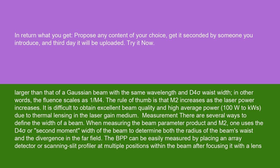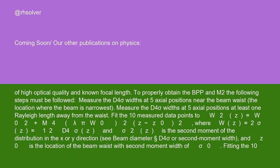Measurement: there are several ways to define the width of a beam. When measuring the beam parameter product and M², one uses the D4 sigma or second moment width of the beam to determine both the radius of the beam's waist and the divergence in the far field. The BPP can be easily measured by placing an array detector or scanning slit profiler at multiple positions within the beam after focusing it with a lens of high optical quality and known focal length.